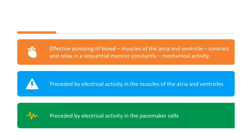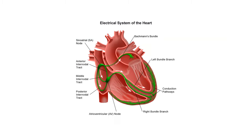Before the contraction and relaxation of the ventricles, there is a preceding electrical activity in the muscles of the atria and the ventricles. This electrical activity in the muscles of the atria and ventricle is possible because of the electrical activity in the pacemaker cells. The pacemaker cells have a property of auto-rhythmicity, wherein they can generate their own impulses. This electrical activity spreads to the muscles of the atria and ventricle through the conducting system.